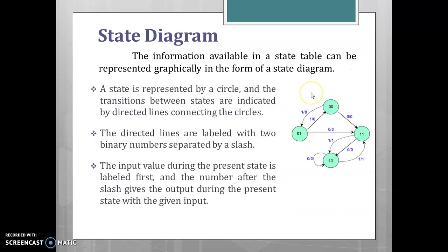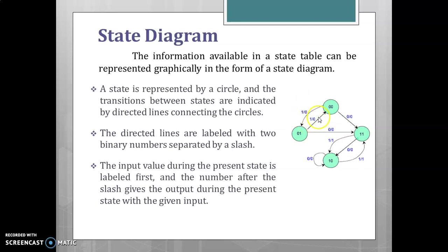The state diagram is a graphical representation of the information available in the state table. In the state diagram, a state is represented by a circle, and the transitions between states are indicated by directed lines connecting the circles. The directed lines are labeled with two binary numbers separated by a slash — the first represents the input and the second represents the output.